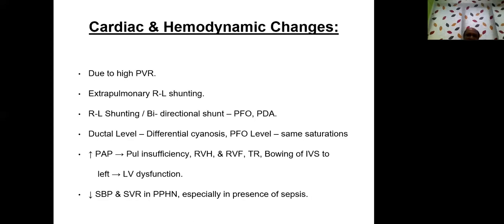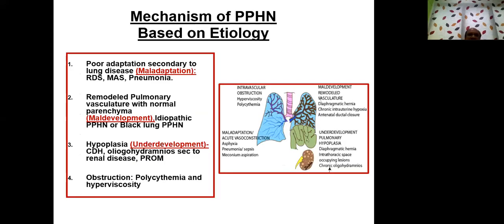The intraventricular septum bulges to the left and causes left ventricular dysfunction. So it starts with right ventricular dysfunction and progresses to left ventricular dysfunction. Babies can also have decreased systemic blood pressure and systemic vascular resistance drop, particularly seen in babies with a history of sepsis or septic shock — one of the causes for pulmonary hypertension.